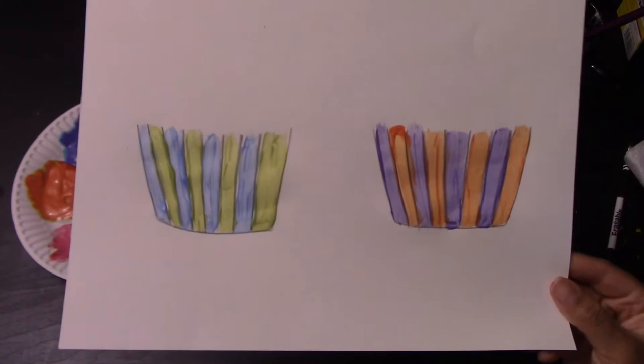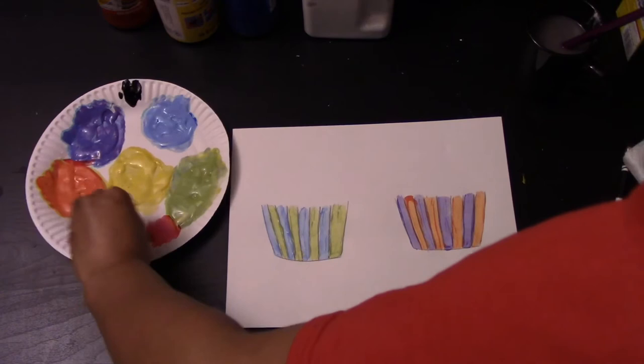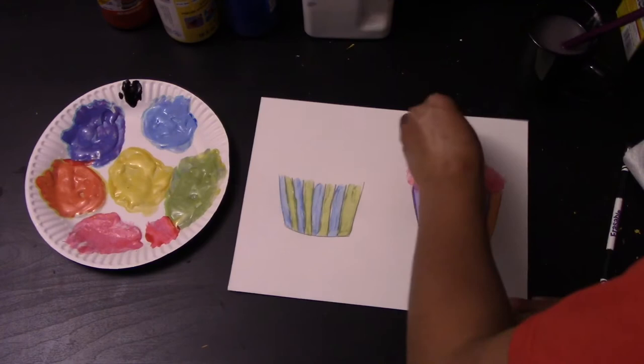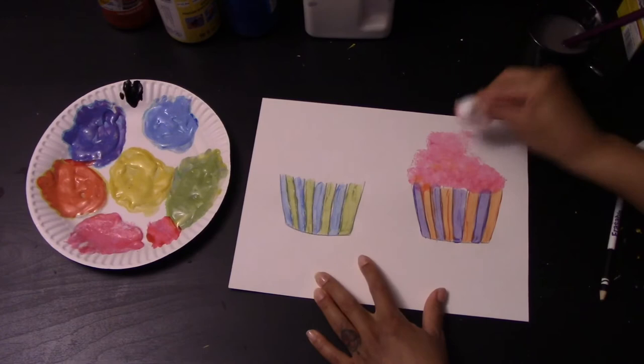Next, we're going to work on the icing. Go ahead and take a cotton ball and dip it into the paint that you would like your icing to be, and begin dabbing them onto the paper. You want to start toward the bottom of your cupcake holder and make your way up as it gets pointier.